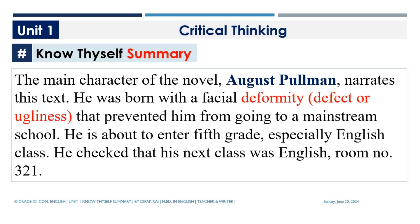The main character of the novel, August Pullman, narrates this text. He was born with a facial deformity — a defect or ugliness — that prevented him from going to a mainstream school. He is about to enter fifth grade, especially English class, and checked that his next class was English in room number 321.